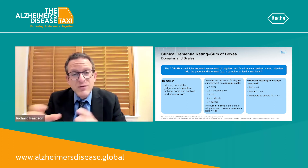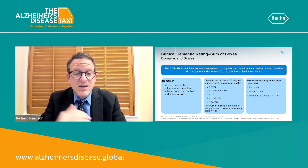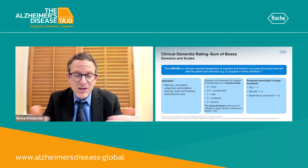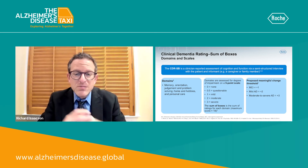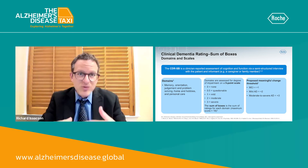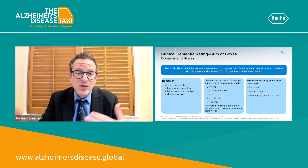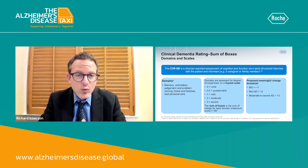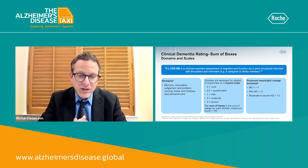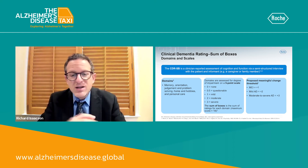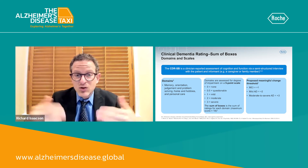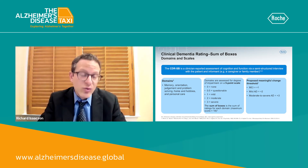The sum of boxes is the sum of the ratings for each of the domains. The maximum score is 18 because the maximum score is three for each category, and there are six domains — three times six is 18 points. The proposed meaningful change threshold — whether the drug or treatment actually moves the needle in a meaningful way — is one point for MCI, two points for mild Alzheimer's disease, and three points for moderate to severe Alzheimer's, when comparing the drug intervention group to the placebo or control group.